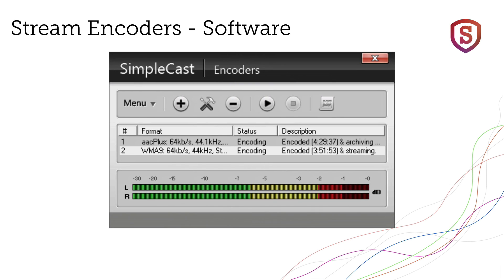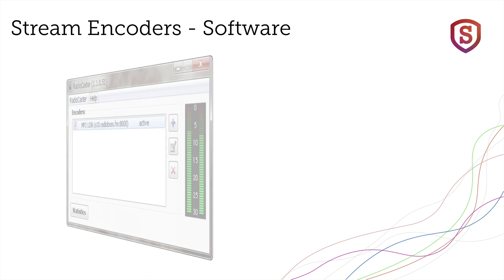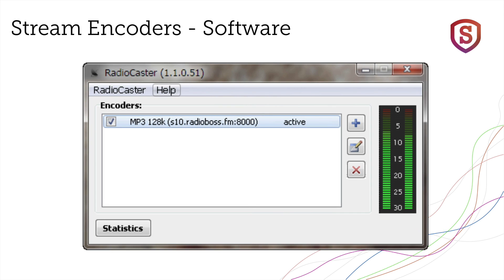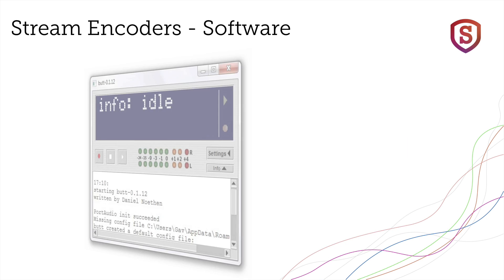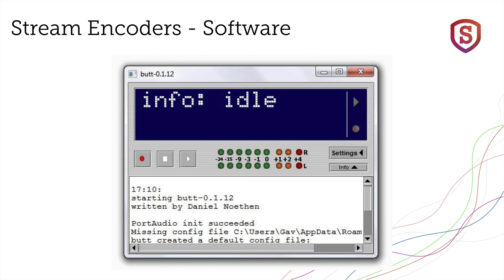Further, it's not possible for a free streaming encoder to contain paid-for licensed coding algorithms, unless some other monetization path is required by the software maker. Finally, no free encoder can offer researched and tested audio processing designed specifically for streaming. Most free encoders have no audio processing whatsoever.